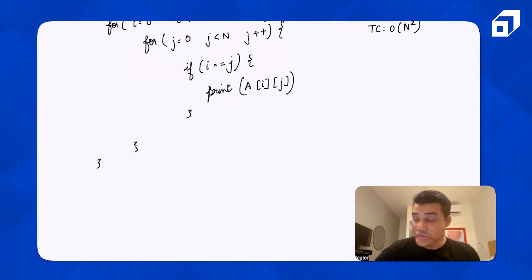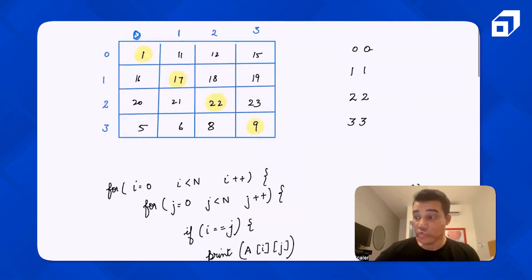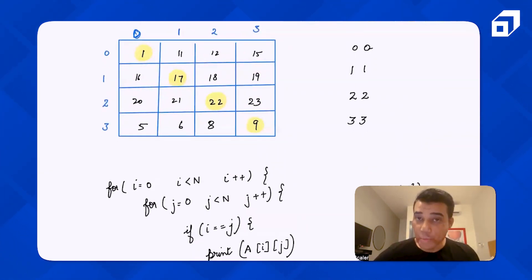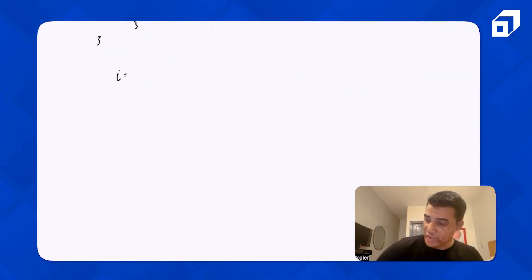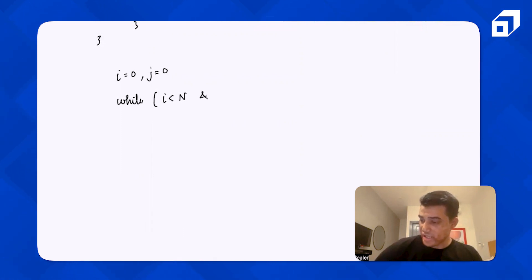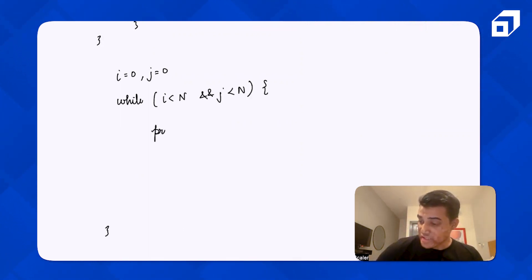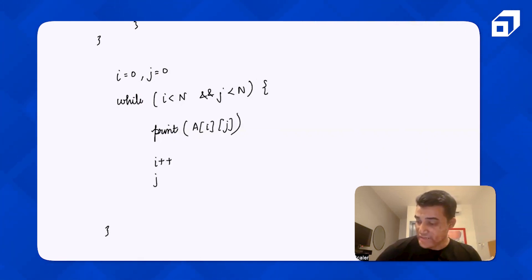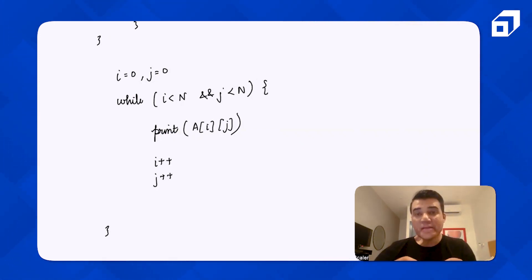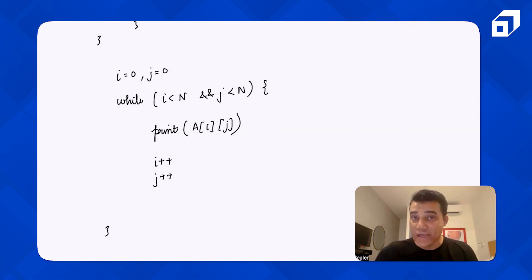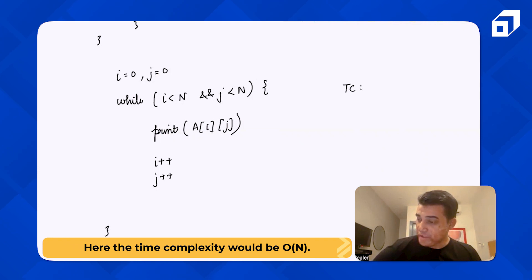To solve this, we can directly print the diagonal elements: (0,0), (1,1), (2,2), (3,3), and so on up to (n-1, n-1). We start with i=0 and j=0, and use a while loop: while i is less than n and j is less than n, print a[i][j], then increment both i and j together. This way we directly traverse only the diagonal elements.